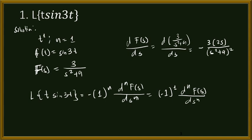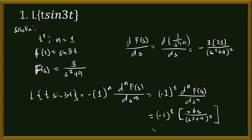That is the first derivative, using the derivative of a quotient where the numerator is a constant: negative c du over u squared. So negative 1 raised to the power of 1 times negative 6s over s squared plus 9 squared. Negative 1 times negative gives positive, so we have 6s over s squared plus 9 squared. There is no need to expand this, so this is our answer for that problem: 6s over s squared plus 9 squared.